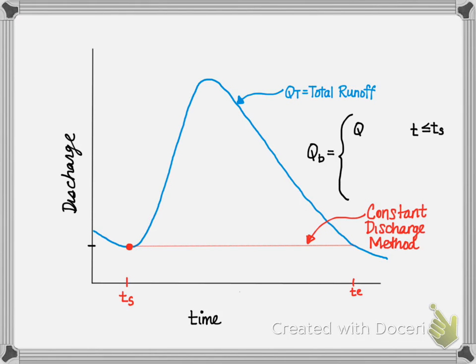We can then write the base flow equation as follows. The base flow is equal to Q total runoff when T is less than or equal to the start time.